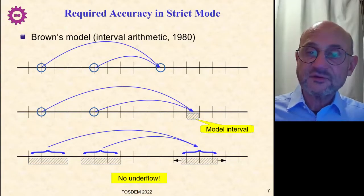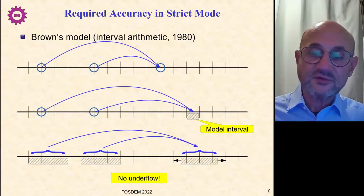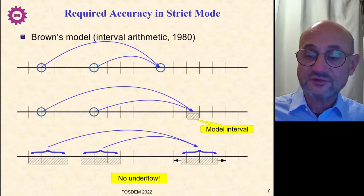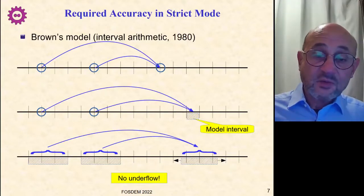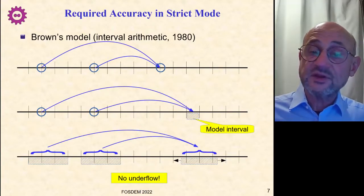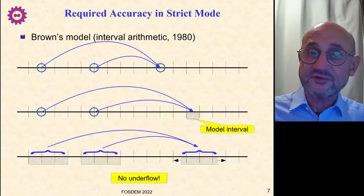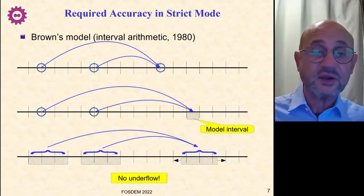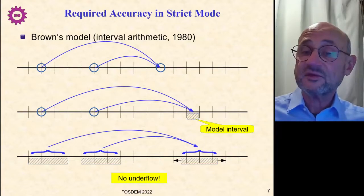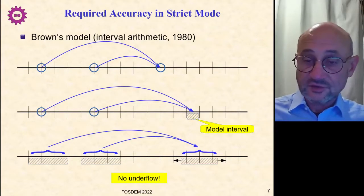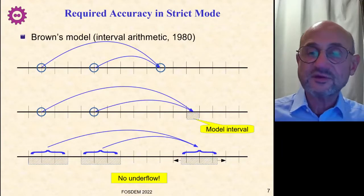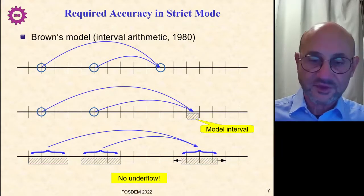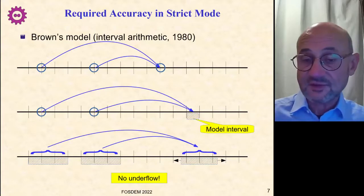A consequence of that model is that you have no notion of underflow because it may happen that the model interval of the result covers zero. In that case, zero is an acceptable value for the result. But there is no special case where the result of an operation gives you a plain zero. It's just accepted by the model.